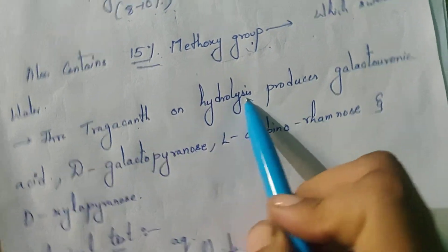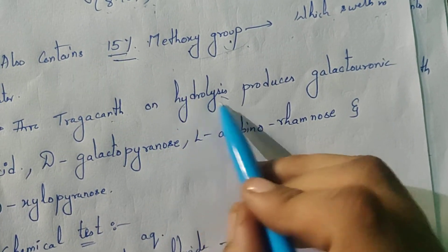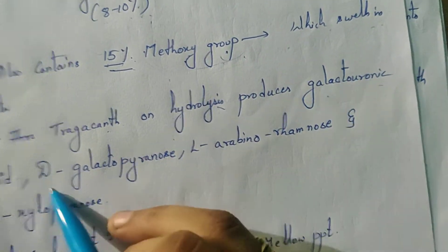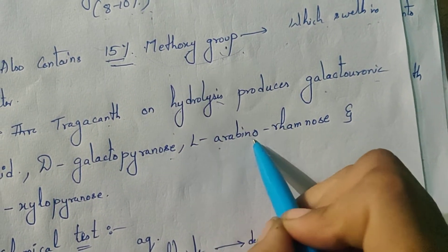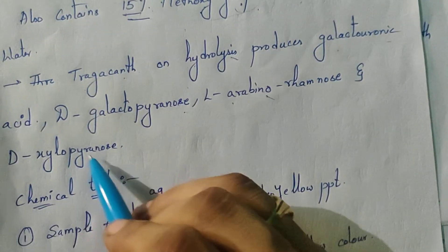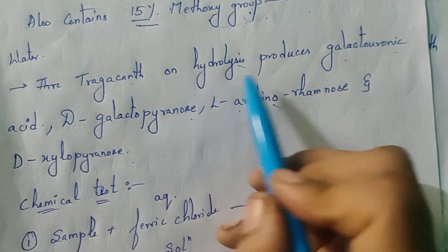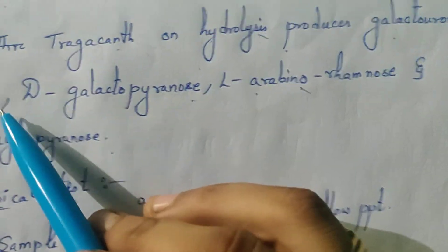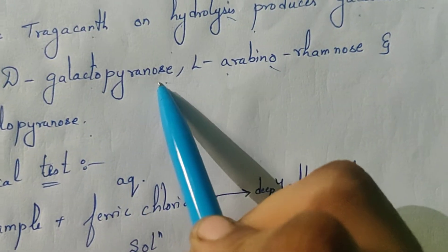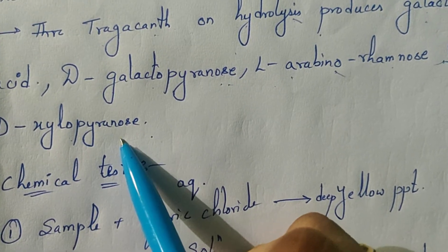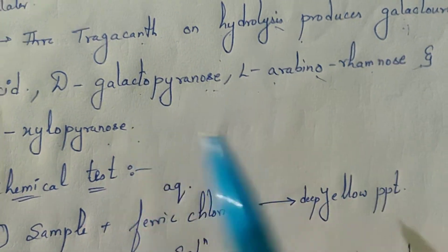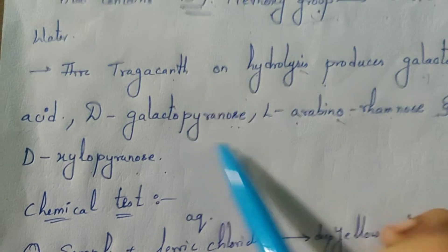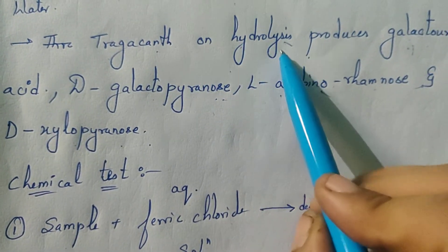Tragacanth on hydrolysis produces galacturonic acid, D-galactopyranose, L-arabino-rhamnose, and D-xylopyranose. These are the four elements obtained after tragacanth undergoes hydrolysis.